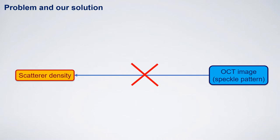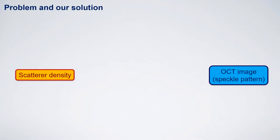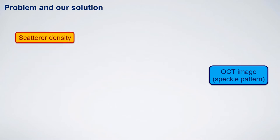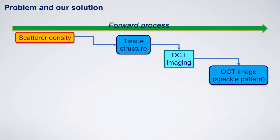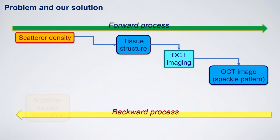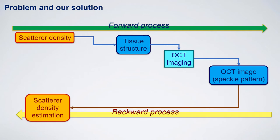Retrieving the scatter density from the OCT speckle pattern is hard. However, the opposite process — namely, determining the OCT speckle pattern from the scatter density — is simple. The tissue structure is determined by the scatter density, and the OCT speckle pattern is determined by the tissue structure. We denote this process as the forward process. This is almost deterministic and simple.